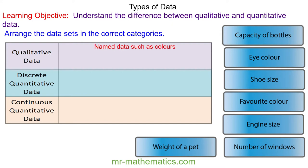Discrete quantitative data is numerical data that can only be certain values such as a number of pencils in a pencil case.